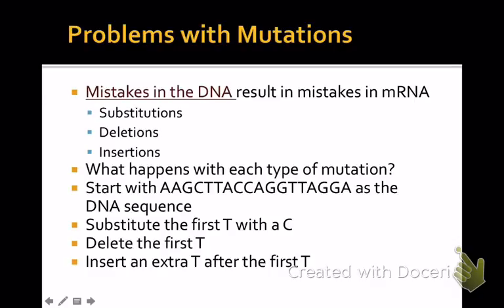There are three kinds of mutations: substitutions, deletions, and insertions. A substitution is when one nucleotide is swapped for a different one. A deletion is when a nucleotide is removed entirely, knitting the two broken ends together. An insertion is when an extra nucleotide is added in. There are also larger chromosomal problems — like losing a whole chunk, making an extra copy, or translocations — but we're not covering those yet.